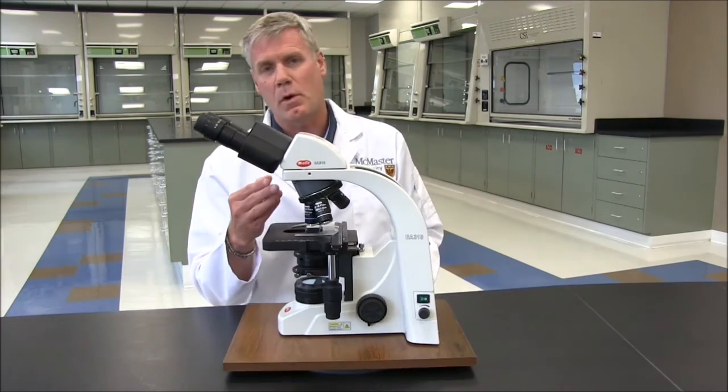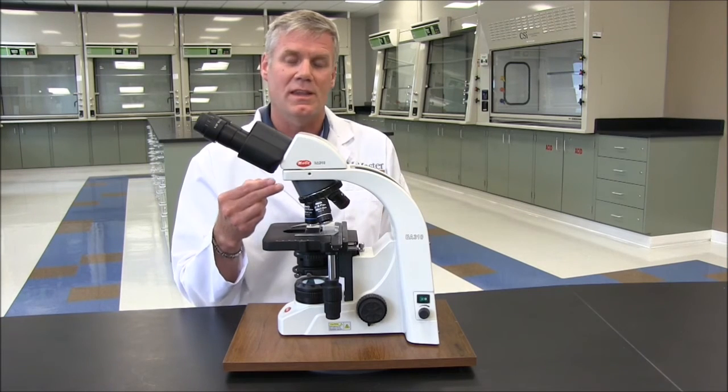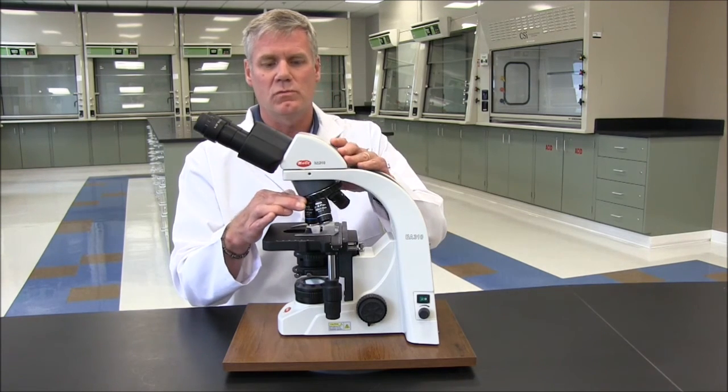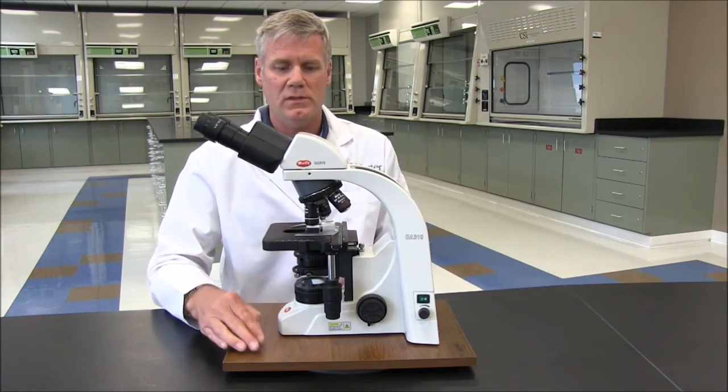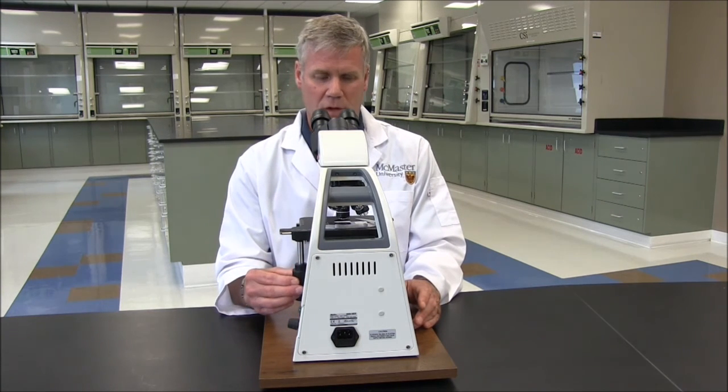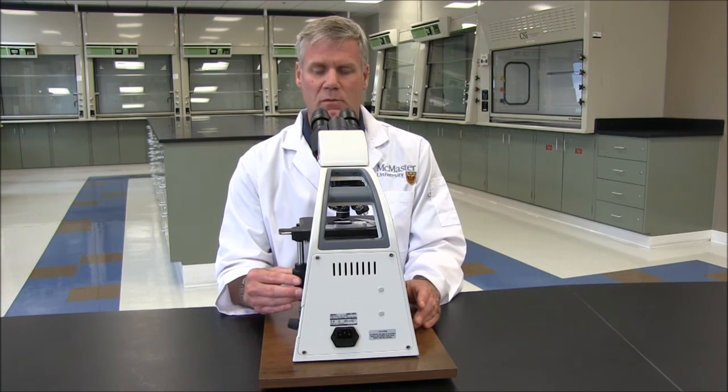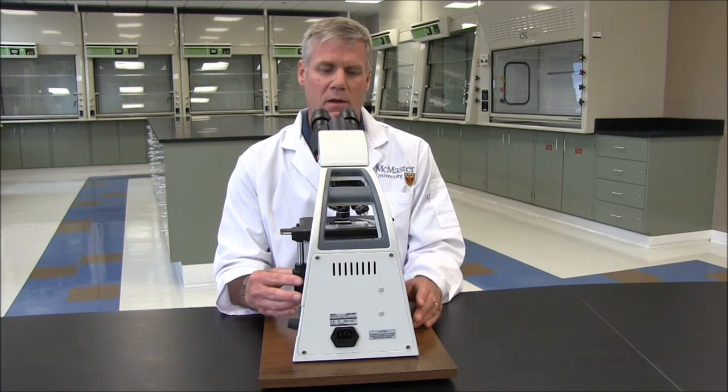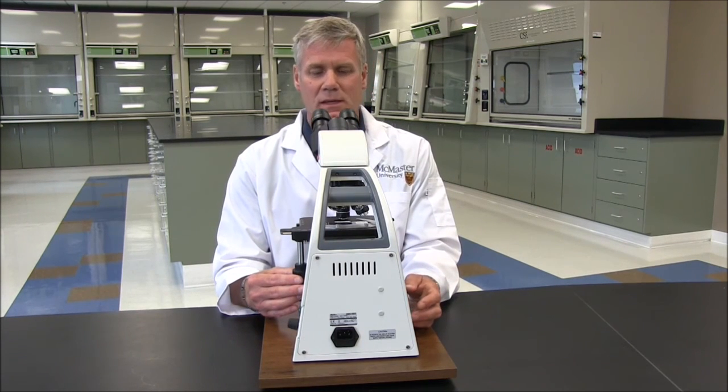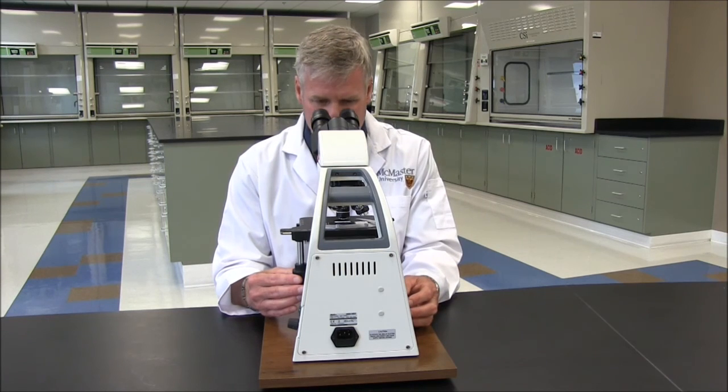Because these objectives are par-focal, if we want to change to the next higher power, we don't have to lower the stage. Just rotate the next objective into place, do a bit of fine focusing, and carry on. With my right hand, I'm going to use the travel knobs to move the specimen around left and right, forward and back. With my left hand, I'm going to keep it on the fine focus to get the clearest picture of my specimen.